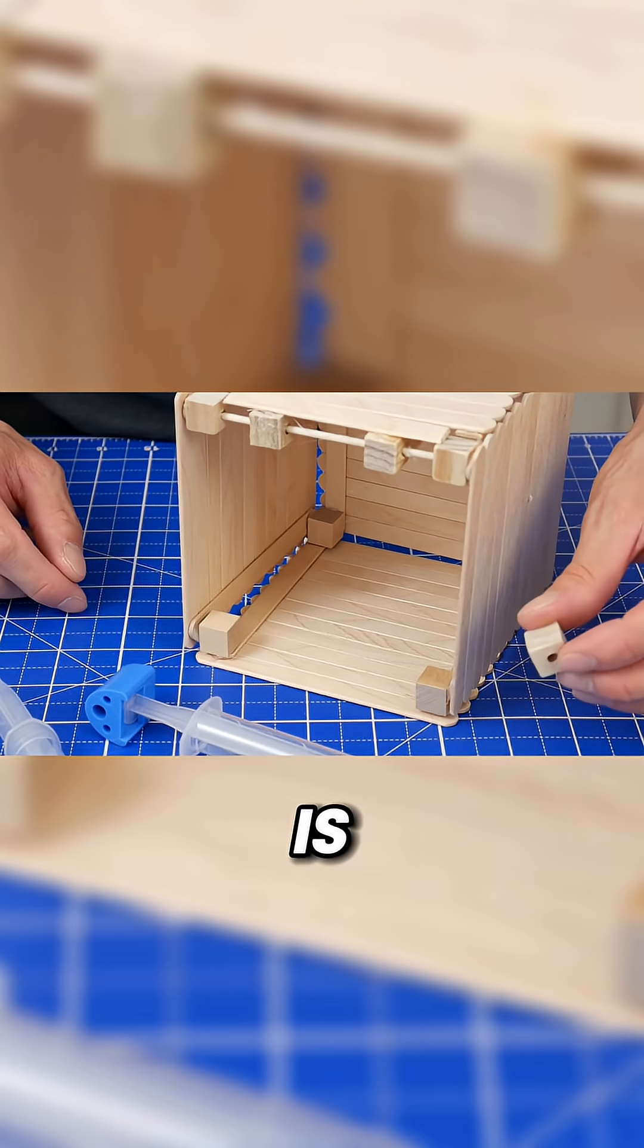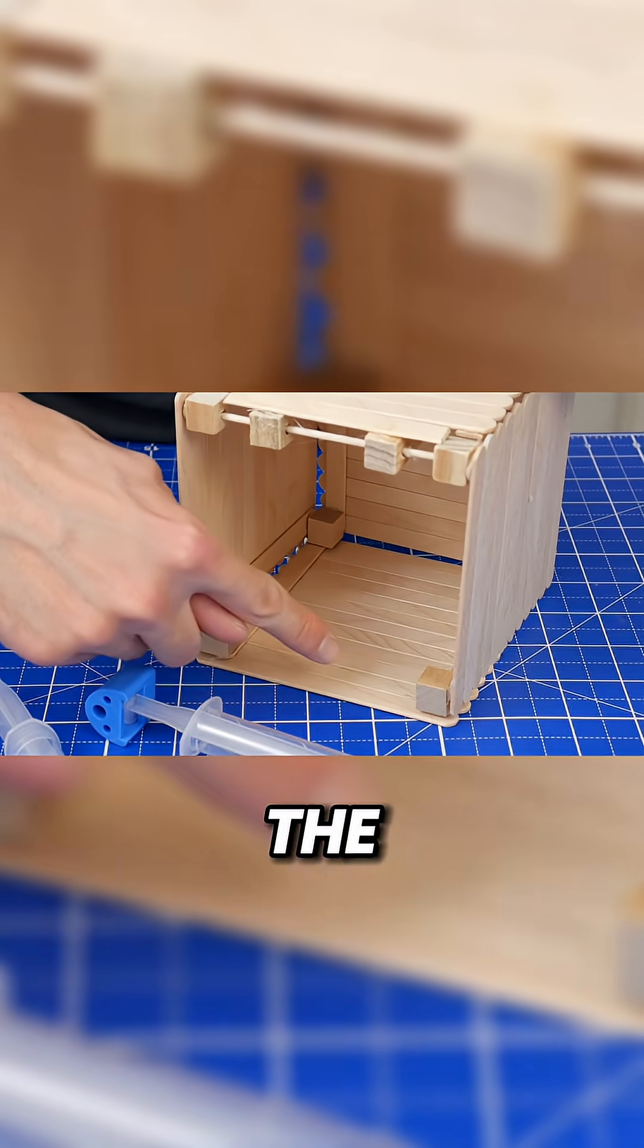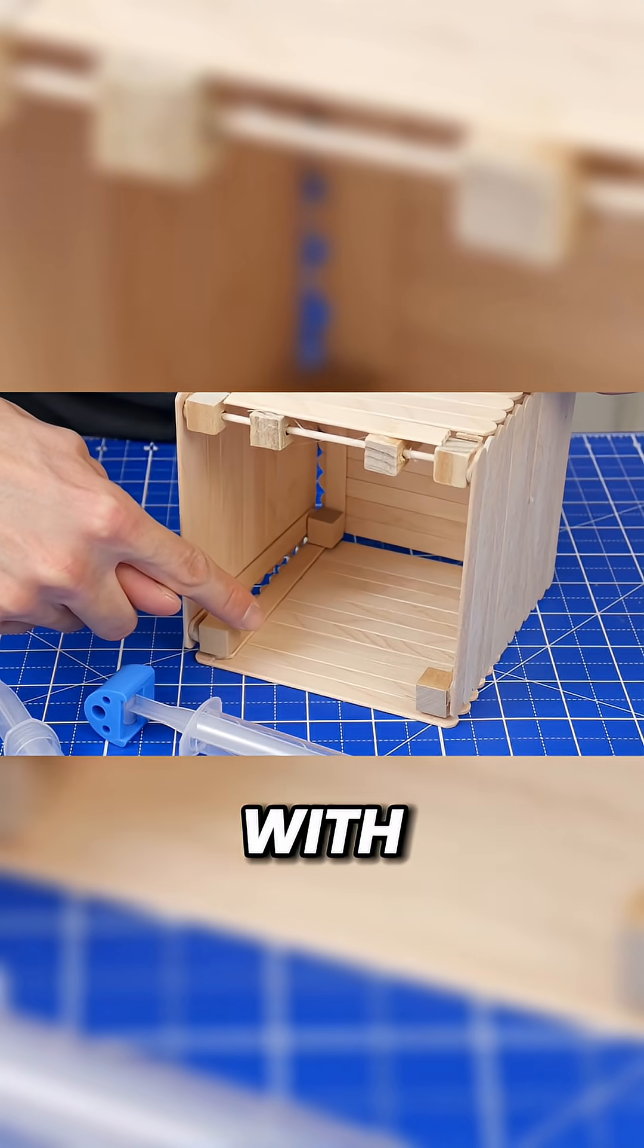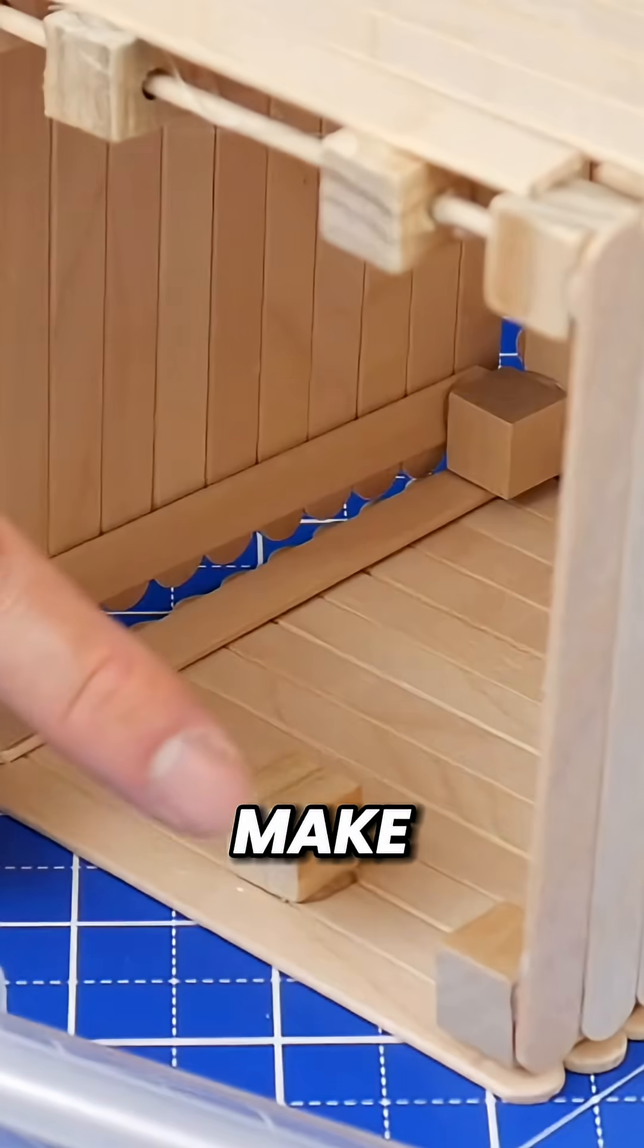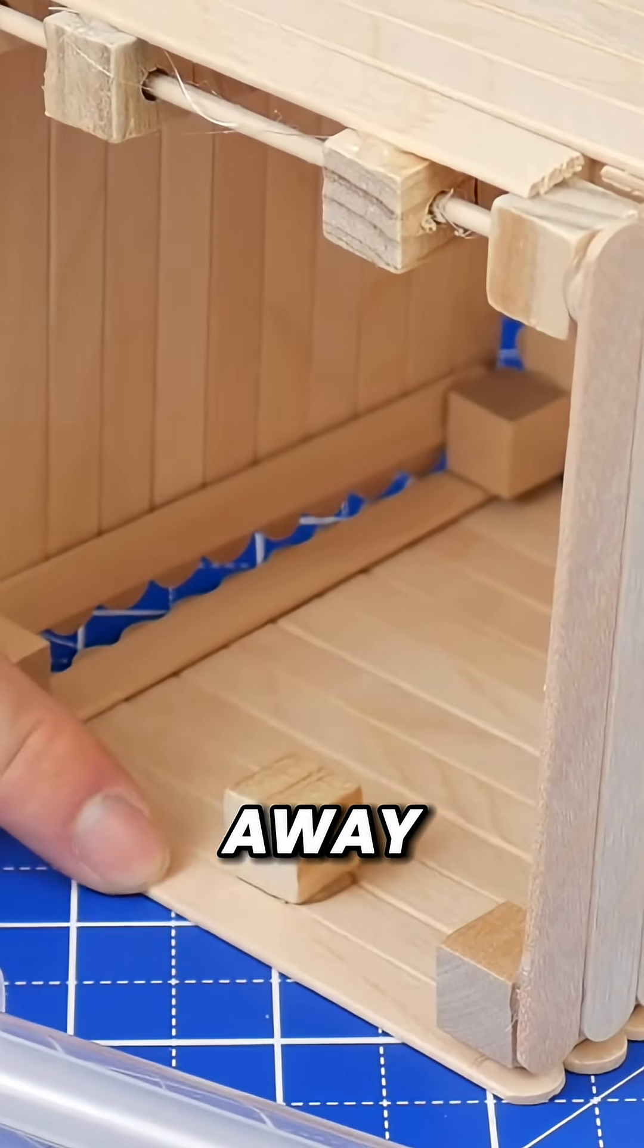The first step to this process is to glue one of these cubes with holes to the bottom center of the box with the holes facing off to the sides. Make sure to glue it about one craft stick away from the edge here.